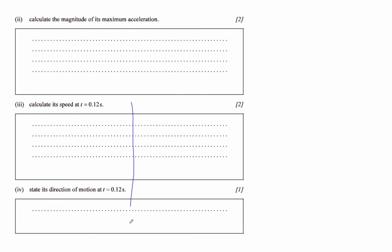So that's way number one. Use v is plus or minus omega square root of x naught squared minus x squared.